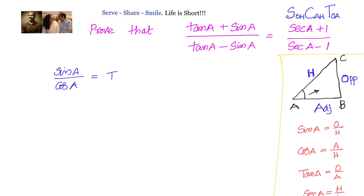We know that sin(a) divided by cos(a) is tan(a). We also know that 1 divided by cos(a) equals secant(a). If you are aware of these identities, then this problem can be easily solved.